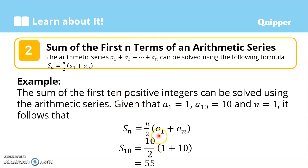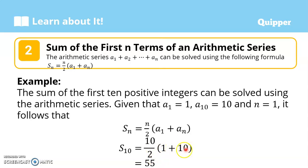So the first term is 1, meaning A sub 1 is 1. We are looking for the first 10 terms, so our n is 10. The last term is 10. Solving that, we have 10 divided by 2, which is 5. Then 1 plus 10 is 11. So 5 times 11 gives you 55. Therefore, the sum of the first 10 positive integers is 55.